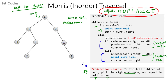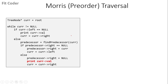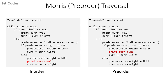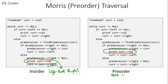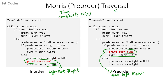This was Morris traversal for inorder. For preorder using Morris traversal, the pseudocode is almost the same — the only change is in the print statement. In inorder the traversal order is left, root, then right, so we print before going to the right. In preorder we first visit the root, then left, then right, so we print before going to the left. That is the only change for preorder using Morris traversal. The time complexity is O(n) and space complexity is O(1) because we are not using a stack or recursion.